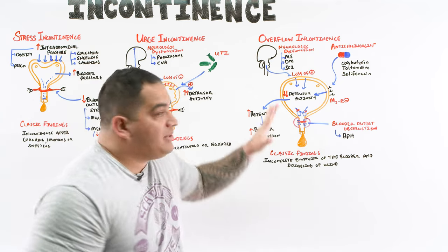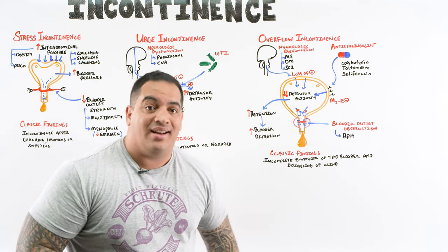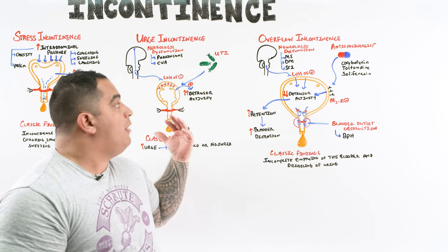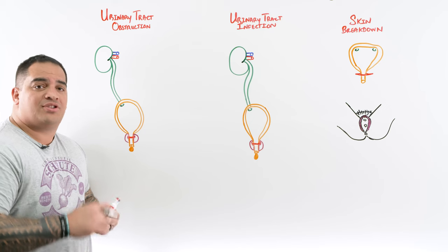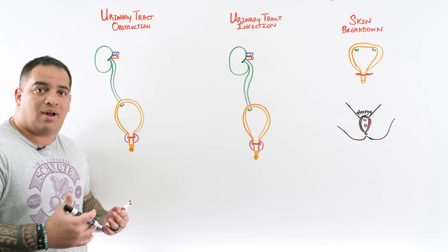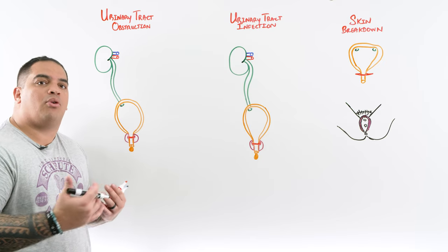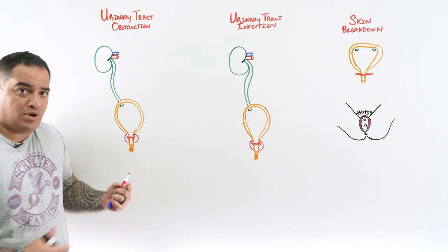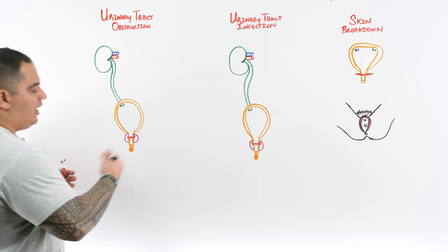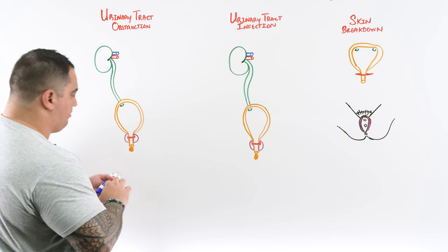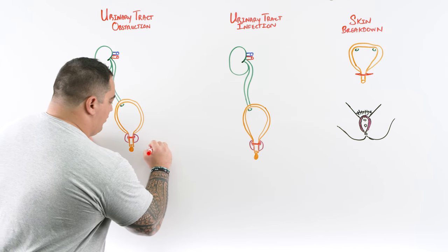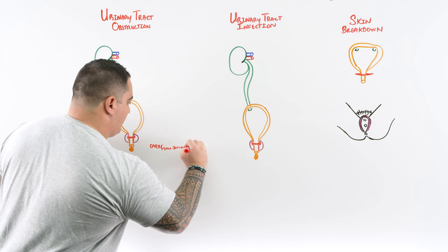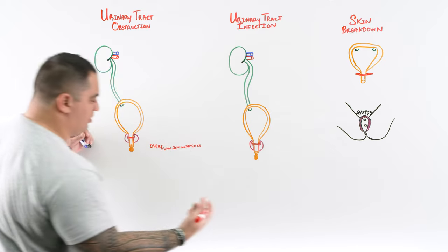Now let's discuss complications of urinary incontinence, with emphasis on overflow incontinence. Two major complications of overflow incontinence are urinary tract obstruction and urinary tract infection. These arise from the pathophysiology: either decreased detrusor muscle activity or bladder outlet obstruction, as seen with BPH.